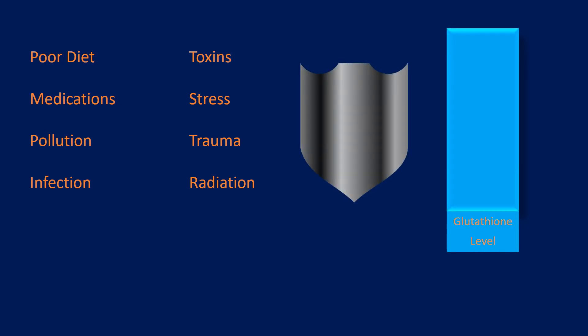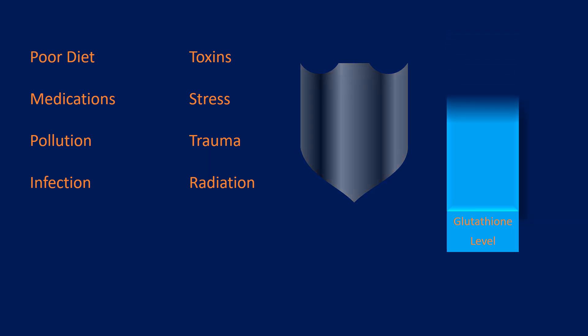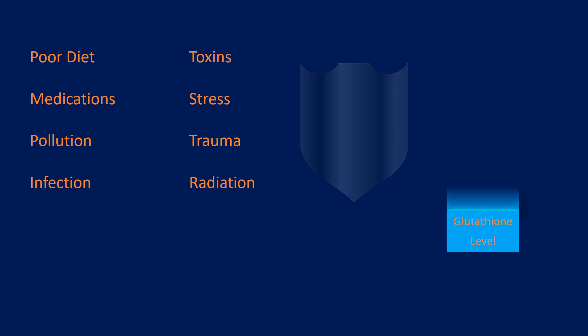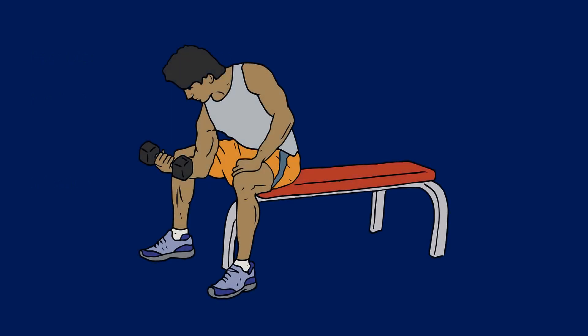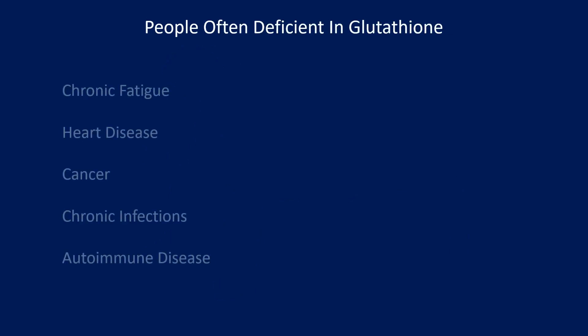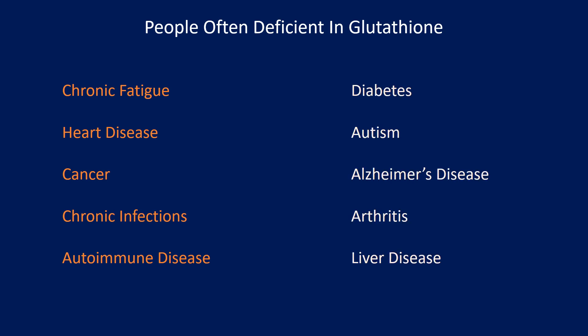Deficiency of this vital molecule increases the vulnerability to free-radical-induced cell damage, and may increase the rate of infection, aging, cancer, and liver damage. The amount of glutathione in the body correlates well with health and fitness level. People with chronic fatigue, heart disease, cancer, chronic infections, autoimmune disease, diabetes, autism, Alzheimer's disease, arthritis, and liver disease very often are deficient in glutathione.